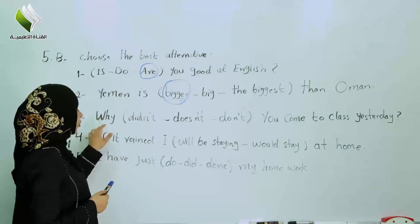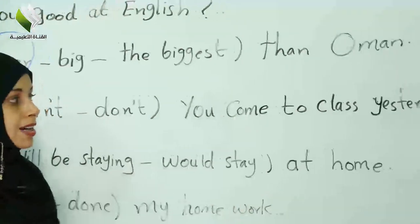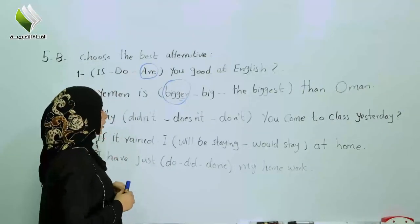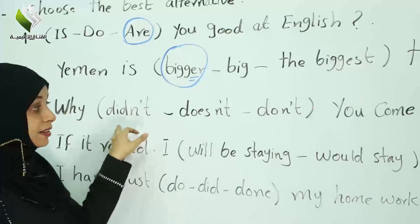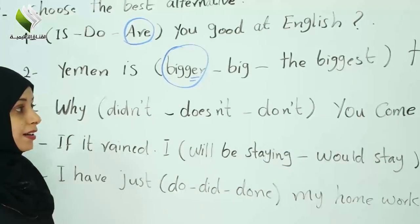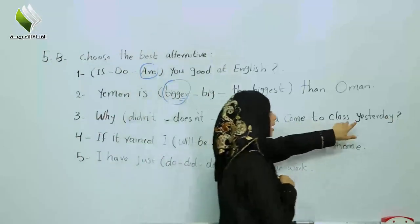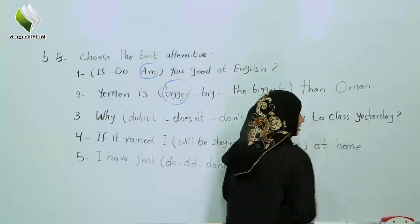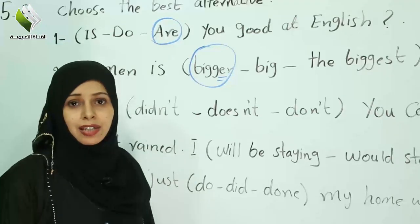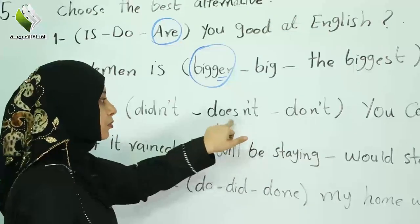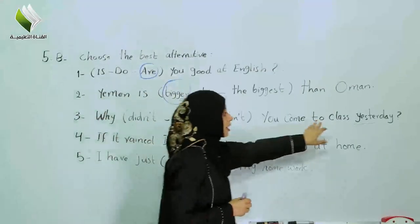Number three: did not, doesn't, or don't? 'Why didn't you come to class yesterday?' The word 'yesterday' signals simple past. We cannot use 'don't' or 'doesn't' here. The correct answer is 'didn't': 'Why didn't you come to class yesterday?'